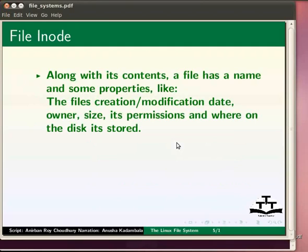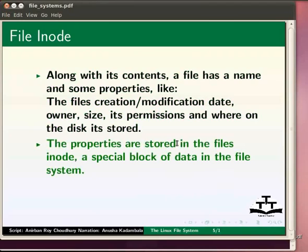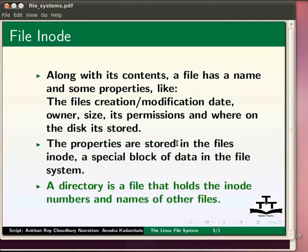As well as its contents, a file has a name and some properties. The properties are stored in the file's inode — a special block of data in the filesystem that also contains the length of the file and where on the disk it is stored. The system uses the number of the file's inode. The directory structure just names the file for our benefit, as it is easier for us to remember names than large numbers.